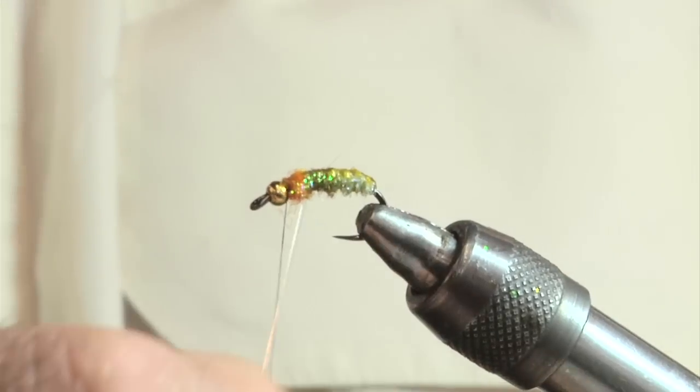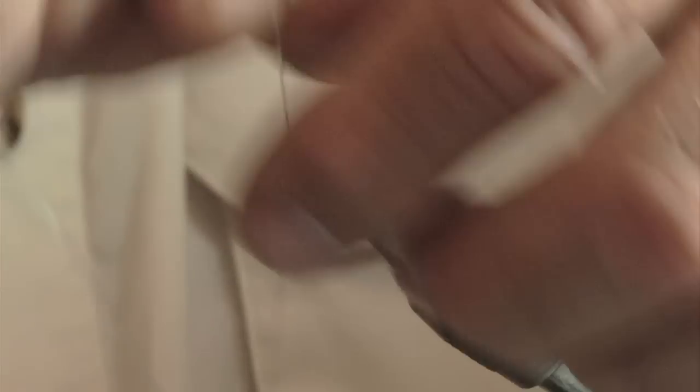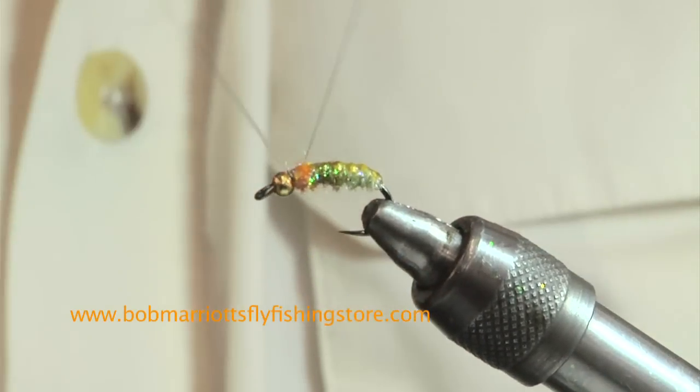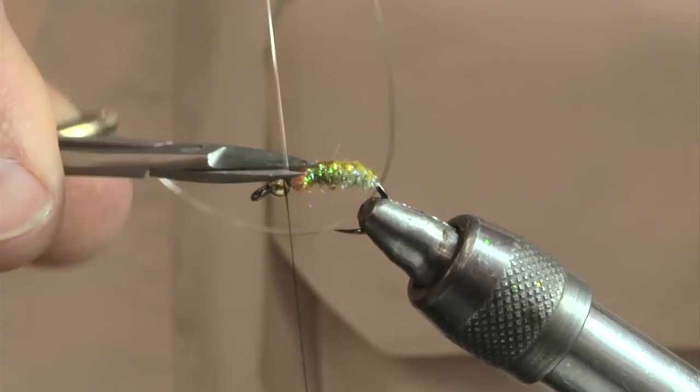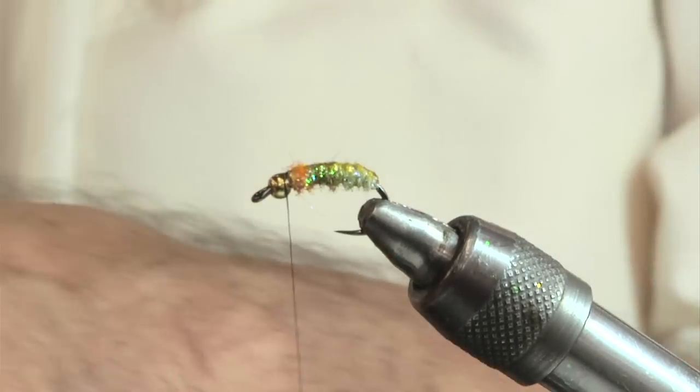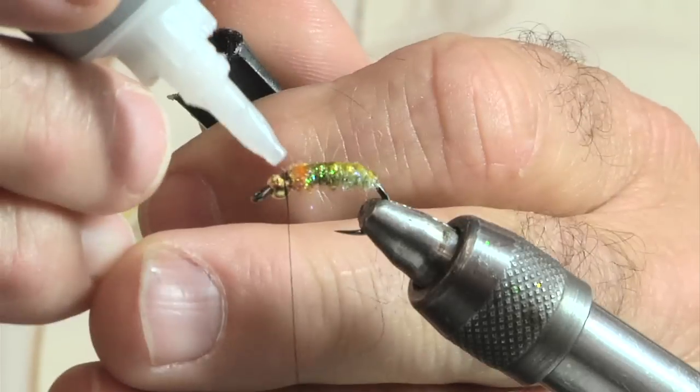Two more ribs. There, final rib. And just a little bit more super glue so we don't lose everything.